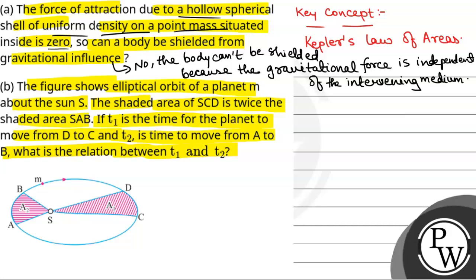Now we will see Kepler's law of areas. The line that joins any planet to the sun sweeps equal areas in equal intervals of time. That is, delta A by delta t is constant.